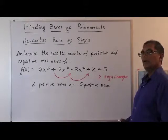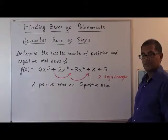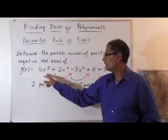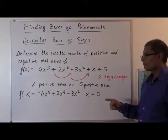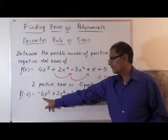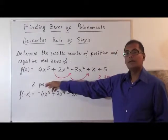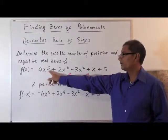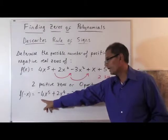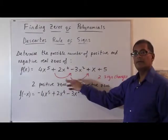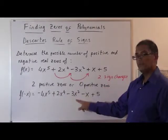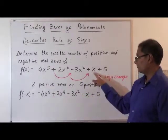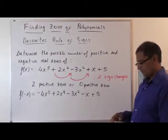So now we'll plug in f(-x). If I plug in a negative x here into all of this, what we end up with is f(-x) equals negative 4x to the fifth, because when I raise a negative x to an odd power, we have a negative. But a negative x raised to an even power still remains positive. So we have plus 2x to the fourth minus 3x squared minus x, so plus x becomes minus x, plus 5.